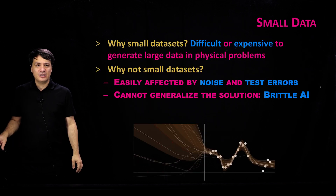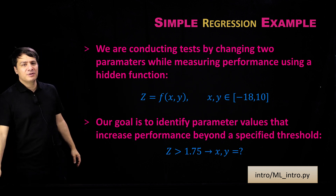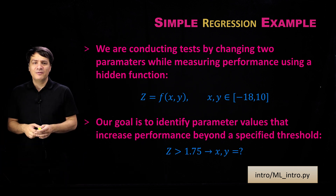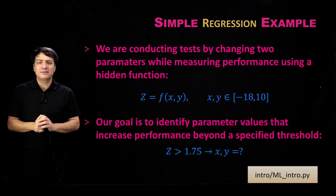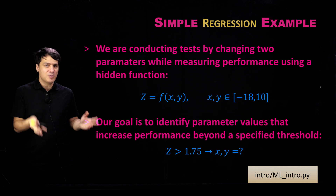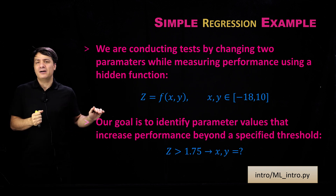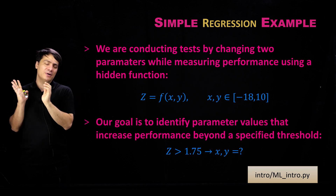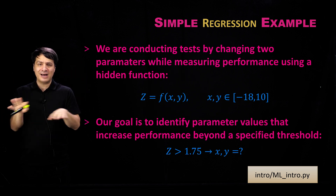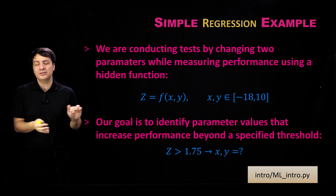In this lecture, we're going to go over a simple example, and I have this simple example for a very specific reason: when you have small data, many people are not convinced that machine learning methods are a good approach for small data sets, especially physical data sets. Here, I have a simple example where I will go over two non-machine learning approaches compared with traditional machine learning approaches without enforcing any physics. In fact, there is no physics here — it's just mathematics.